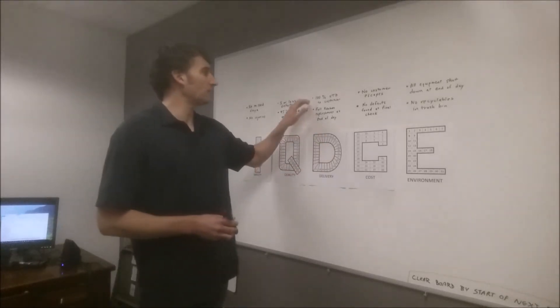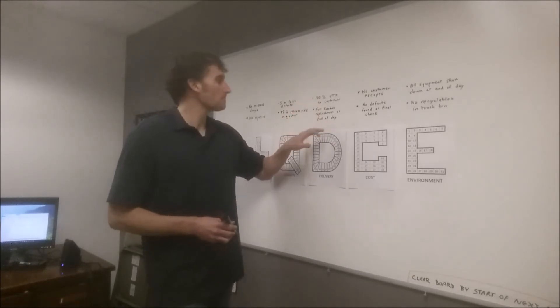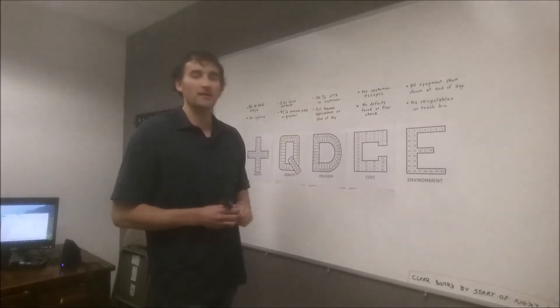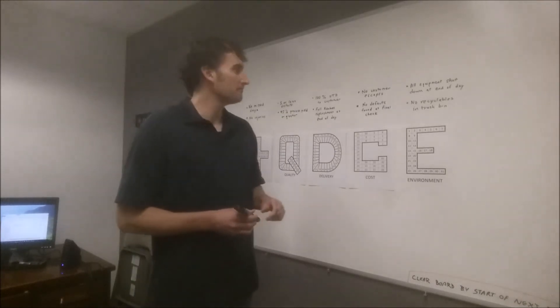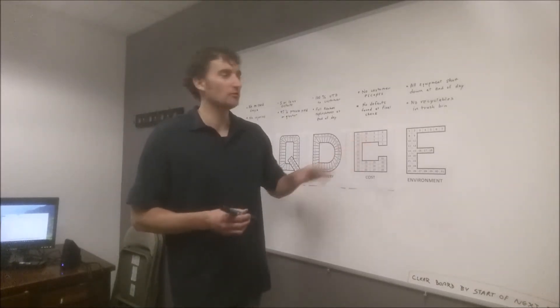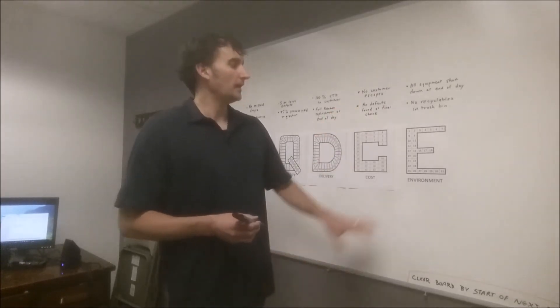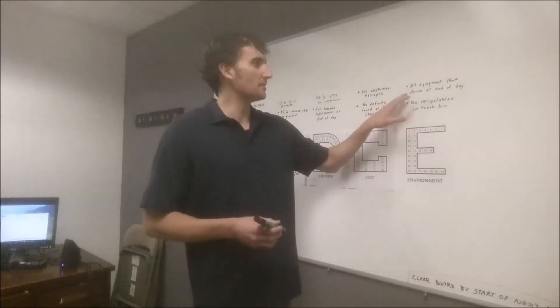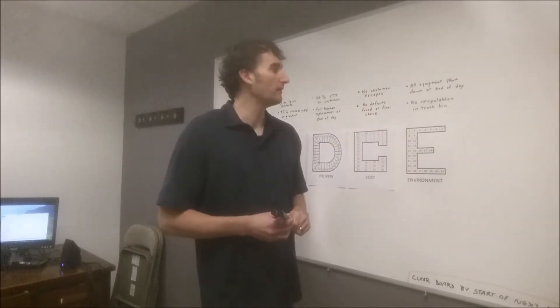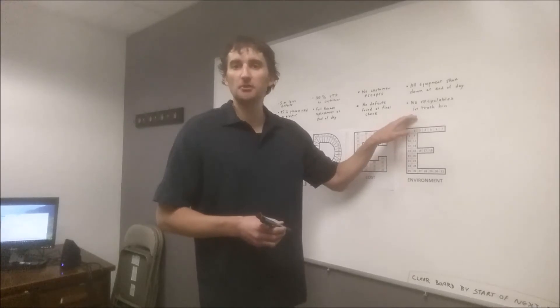For delivery, we want to have 100% on-time delivery to your customer or full Kanban replenishment at the end of the day. We need to meet both to accomplish their green. For cost or customer, depending on how you label it, it's no customer escapes and no defects found at our final check. And for environment, we might add something like all equipment needs to be shut down at the end of the day and no recyclables in the trash bin.